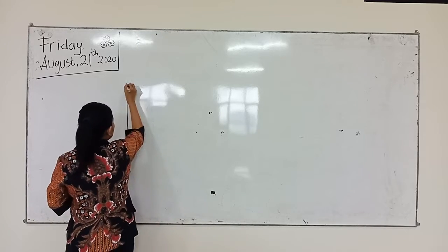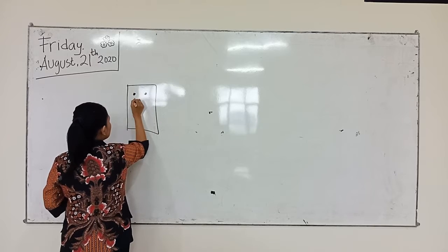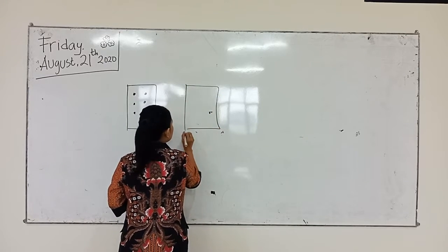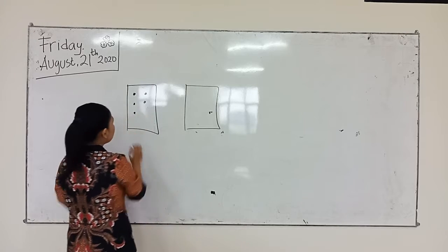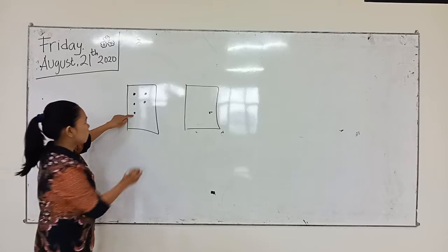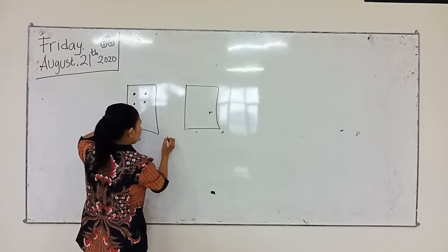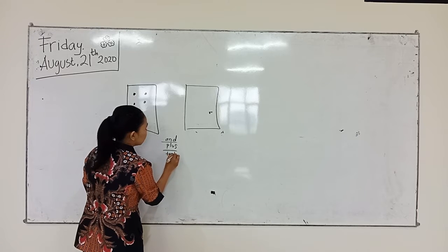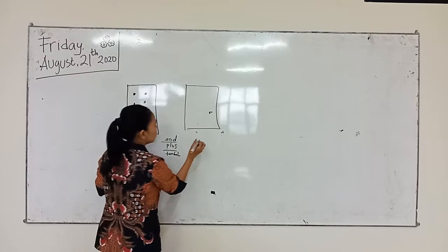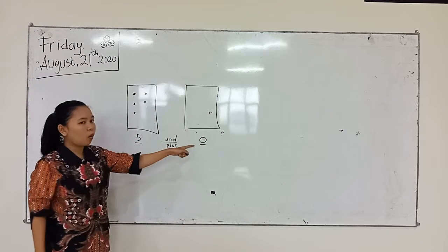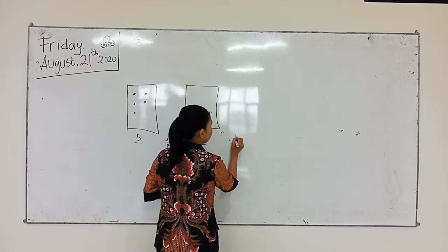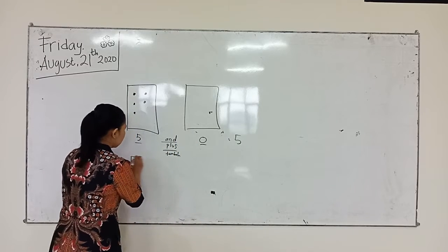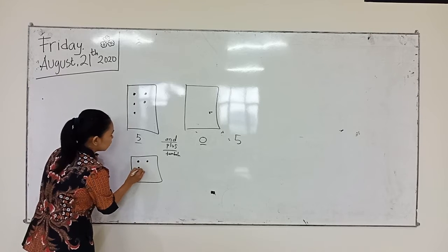Number A: there are dots like this — one, two, three, four, five. This one is empty. And this one we count: one, two, three, four, five. We write five here. And empty means zero. So five plus zero makes five.